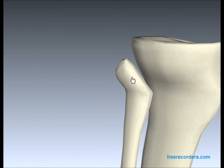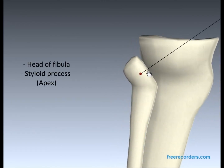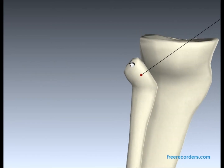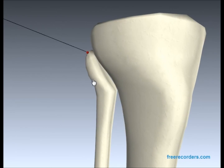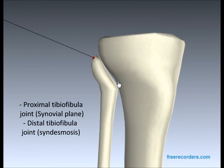Now going on to the fibula. The fibula has the head, which is just there, and we have the styloid process, also known as the apex, which is this curved and pointy part just there. These two bones form what's called the proximal tibiofibular joint, which is a synovial plane joint.